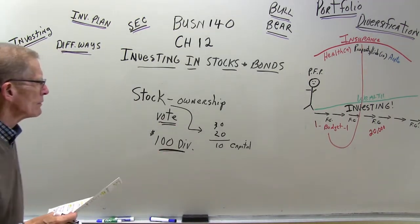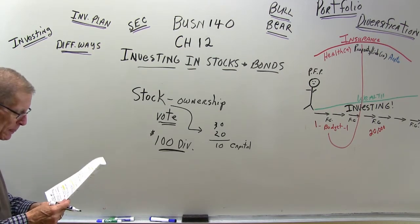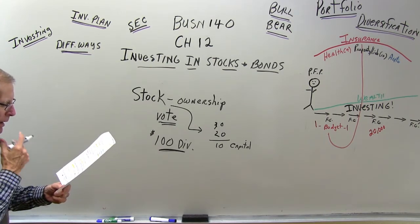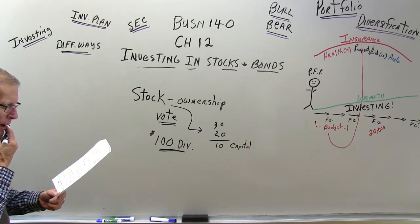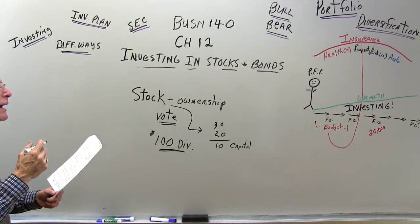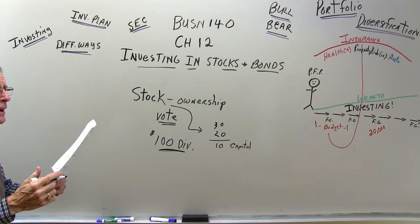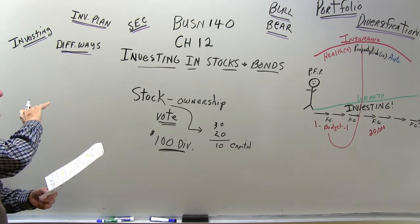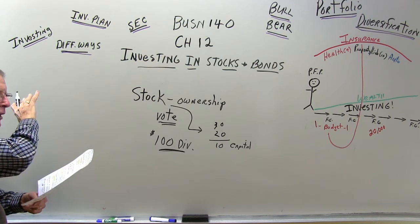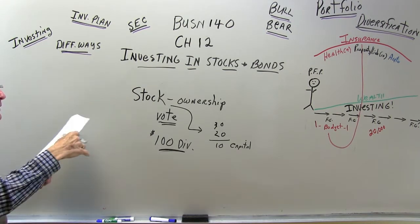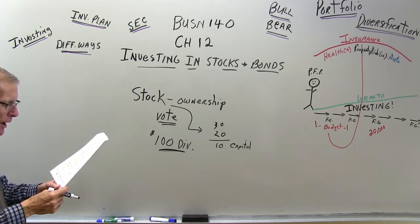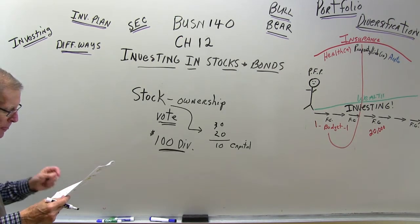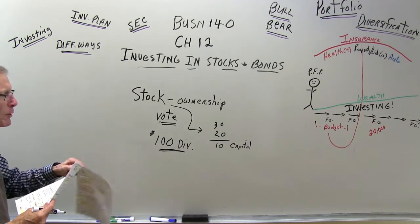Normally when companies do well, they like to share that profit and wealth with their owners by paying dividends. That's how you can receive income from stock. There are different types of stock: the Dow Jones Industrial Average tracks 30 blue chip stocks to monitor market movement. You can also buy technology stocks, growth stocks, and many other kinds of stock available in the market.